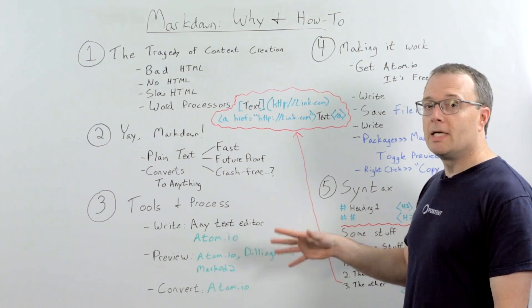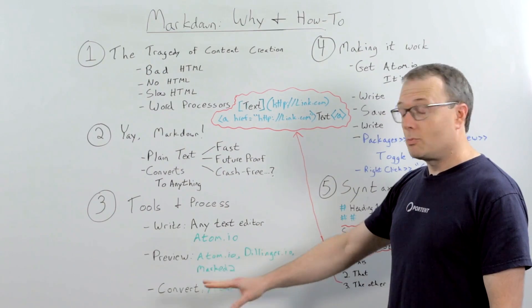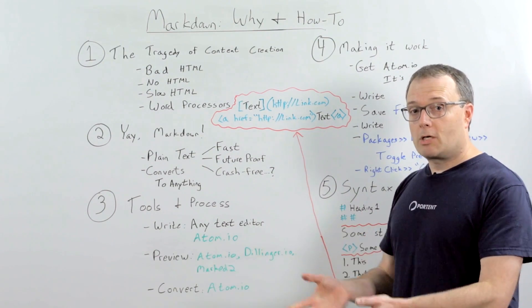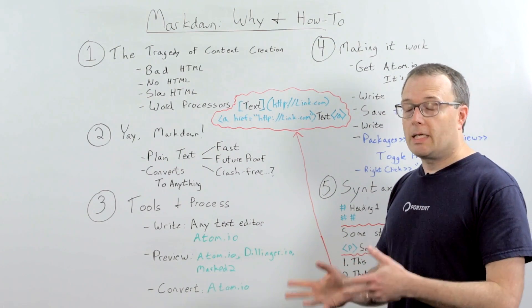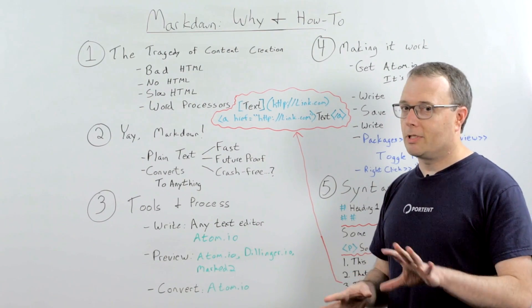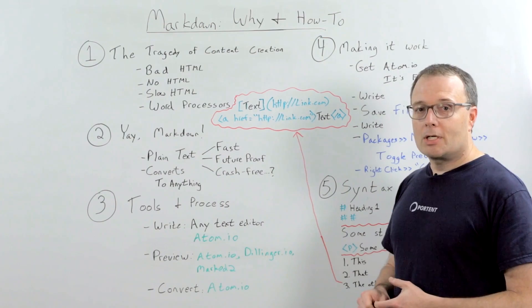How do you do it? Well, the first thing is you need certain tools to fit a process. Like almost any writing process, you write, you preview, and then you convert. If you do that in Microsoft Word, use Microsoft Word to do your writing. You use Word to do your preview, and then you convert by either saving the file and giving it to someone else or converting it to PDF or, and please don't do this, converting it to HTML.